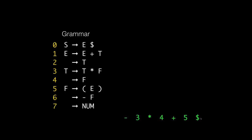It's a simple predictive parser with one token lookahead. The input string represents the expression: minus three, asterisk, four, plus five, then end of file. Internally YAC has a stack. The first lookahead token is the minus sign, so it's going to shift that onto the stack. It then sees the three and shifts that onto the stack too. The lookahead token is now the asterisk, so it chooses to do a reduction — it notices that three, which is a num, matches the right-hand side of production seven, and reduces it to F.